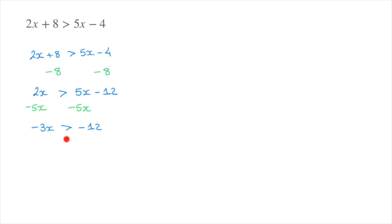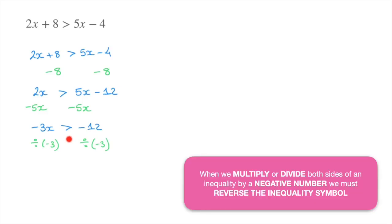We now solve negative 3x greater than negative 12. On the left hand side x is being multiplied by negative 3, so to get rid of this negative 3 we divide by negative 3, and we must do the same on the right hand side. Careful! In this case we're dividing by a negative number. Remember that when we multiply or divide both sides of an inequality by a negative, we must reverse the inequality symbol — so this greater than is going to turn into a less than. Negative 3x divided by negative 3 leaves us with x, and negative 12 divided by negative 3 equals 4. Since we divided by a negative, we reverse the inequality symbol and state the final answer as x is less than 4.